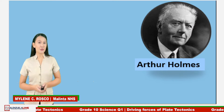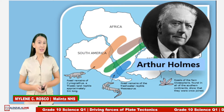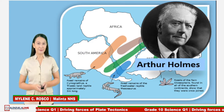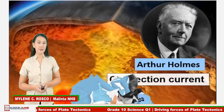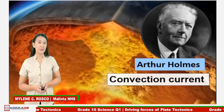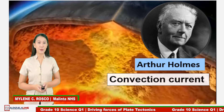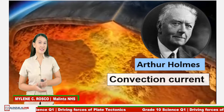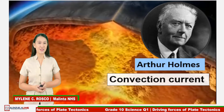In 1930, Arthur Holmes suggested a mechanism that could explain Alfred Wegener's theory of continental drift. He proposed the power of convection current as the driving force of plate movement. It is a widely accepted driving mechanism for continental drift, which led to the foundation of modern plate tectonics. To understand Holmes' theory, first, you should have an idea of convection current.